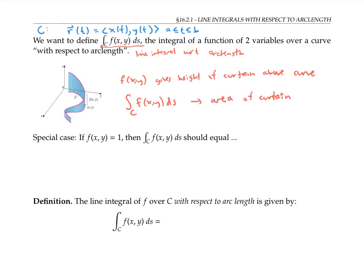Let's consider this special case first. If the function is always one, so the curtain has constant height of one, then this line integral representing the area of the curtain should be exactly equal to just the length of the curve times that constant height of one. Since multiplying by one unit doesn't affect the numerical value of the answer, just the dimensions or units, then that means that this line integral should just be equal numerically to the arc length.